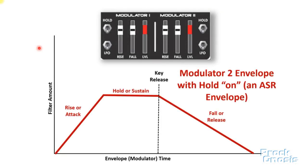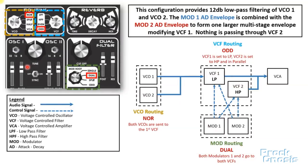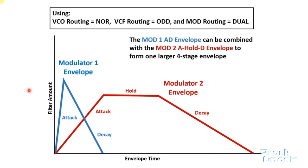Now that we understand the Nyx has not one but two simple AD envelopes labeled Modulator 1 and 2 — and yes, those AD envelopes can be turned into ASR envelopes — they can be combined to create more complex envelopes, even a full ADSR four-stage envelope. To make this happen, the routing needs to be configured a certain way, basically allowing both modulators to control only one filter. If we give one modulator a quick rise and fall and set the second modulator to hold, creating a sustain stage, we get a combined ADSR shape.